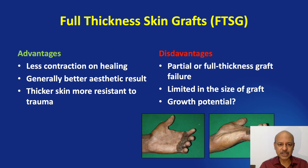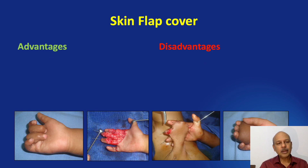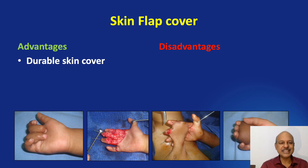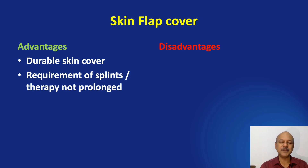Look at this patient who has had full thickness grafting done in early childhood. Now he is in his late twenties and has presented with this problem, so obviously the growth potential differs. Now coming to skin flap cover — the advantages are durable skin cover, as you can see in this example. The next advantage is that the requirement of splints and therapy is not prolonged.